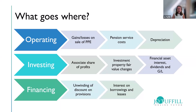Financing includes the unwinding of the discount on provisions — for example, a decommissioning provision. Any unwinding of a discount goes through financing. Interest on borrowings and leases also goes through financing.